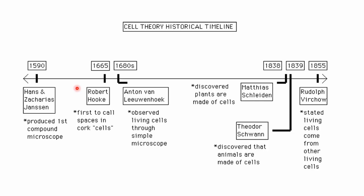This is the cell theory historical timeline, which is important from an exam perspective. The first compound microscope was invented in 1590. In 1665, Robert Hooke first visualized cells in a cork slice. In 1680, Anton van Leeuwenhoek observed living cells through a simple microscope. In 1838, Matthias Schleiden discovered plants are made up of cells. In 1839, Theodor Schwann discovered that animals are made up of cells. In 1855, Rudolf Virchow stated that all living cells come from pre-existing cells — Omnis cellula e cellula.